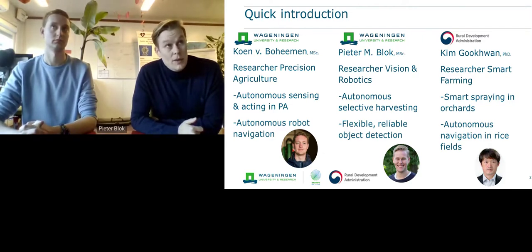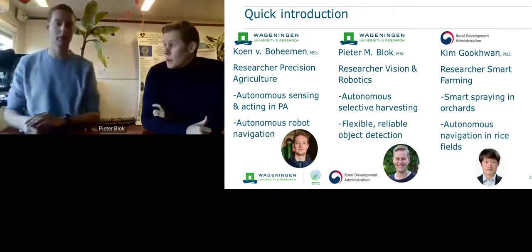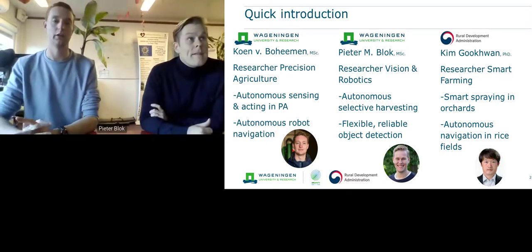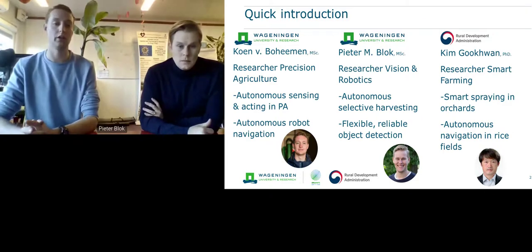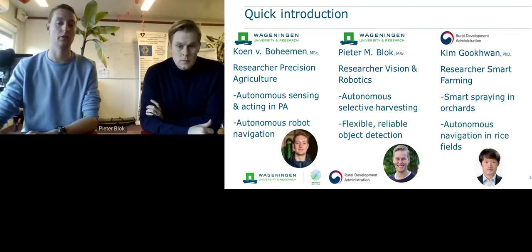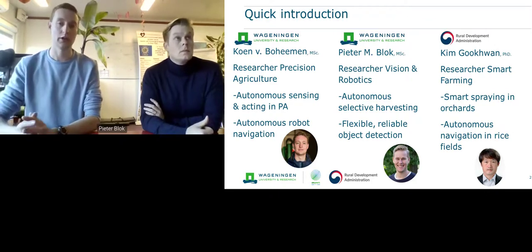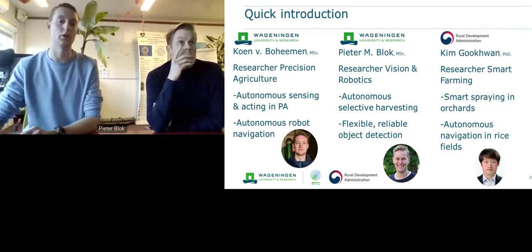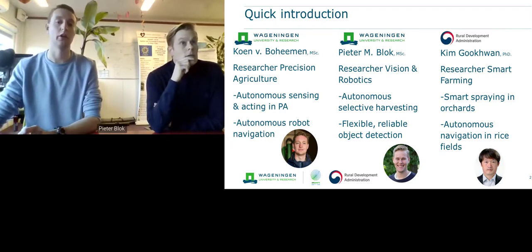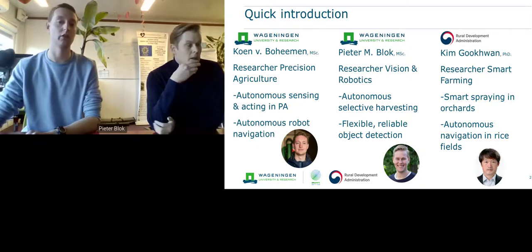My name is Koen van Bohemen and I also work at Wageningen University and Research as a researcher in precision agriculture, focusing mainly on autonomous sensing and acting in precision agriculture, and also autonomous robot navigation, which we will be talking about today. I'd also like to introduce our partner researcher Dr. Kim Gook-Kwan, who is a researcher in smart farming working at the Rural Development Administration in South Korea, focusing on smart spraying in orchards and autonomous navigation starting in rice fields but also working in orchards.